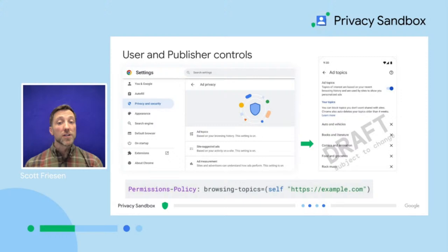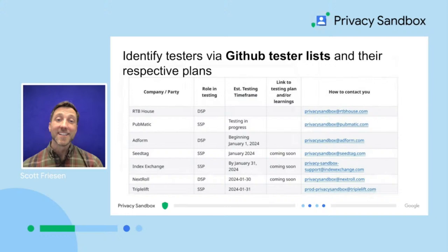For example, with Topics, users can view and control how their cross-site data is used to personalize ads in a more intuitive and accessible manner compared to tracking mechanisms like third-party cookies. Publishers also have additional controls with the Privacy Sandbox by updating your site's permission policy. For example, a site can choose to opt out of topics calculations or can control which third parties have access to topics on your page. If you'd like visibility of companies participating in testing of Privacy Sandbox technologies, we recommend checking out the tester list within GitHub for each API.